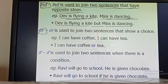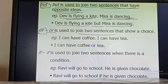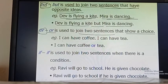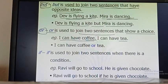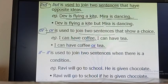Or. 'Or' is used to join two sentences that show a choice. When you have a choice between two things, you use 'or.' For example: I can have coffee, I can have tea. When you have a choice between coffee and tea, you use 'or' to join those two sentences: I can have coffee or tea.